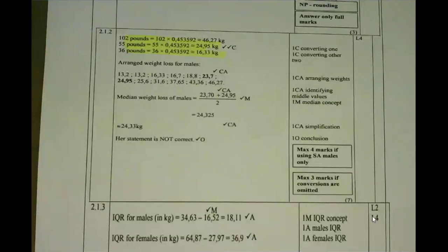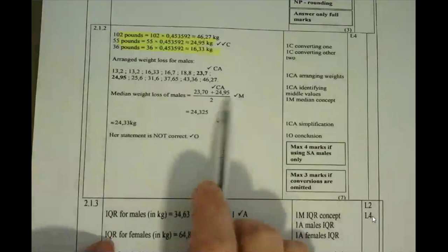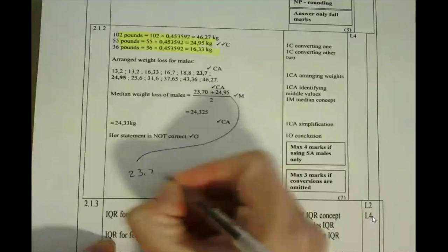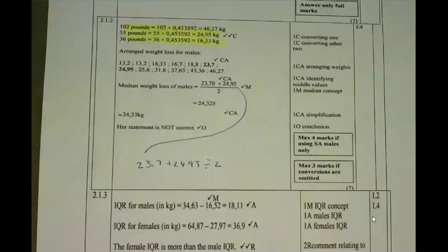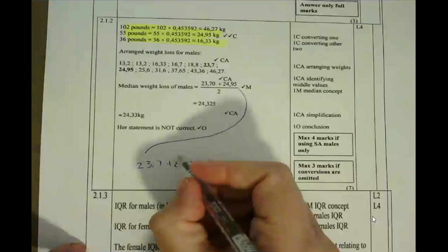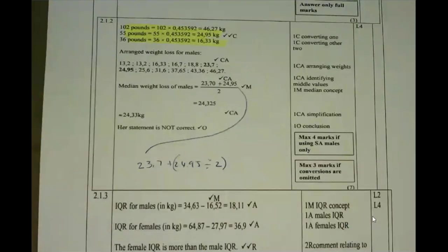What learners do is they take 23.70 plus 24.95 divided by two, but the problem is they just type it into the calculator as they say it: 23.7 + 24.95 ÷ 2. When they type it in like that, BODMAS kicks in. What you're supposed to do is add the two together first and then divide by two, but BODMAS first divides 24.95 by two and then adds on the 23.7. So that answer will not be the same — you'll get 36.175.